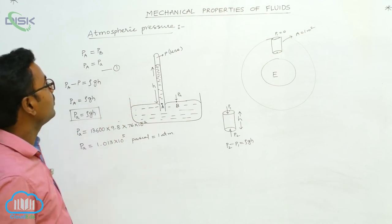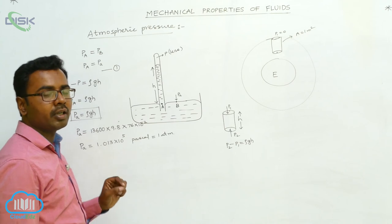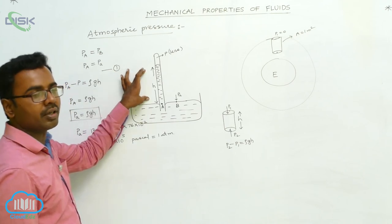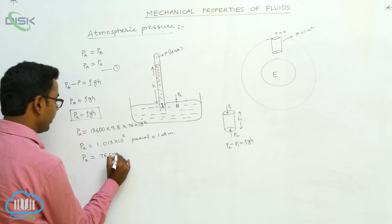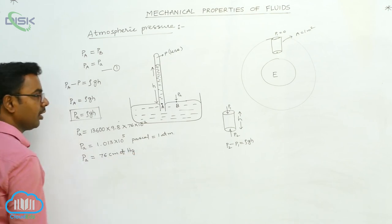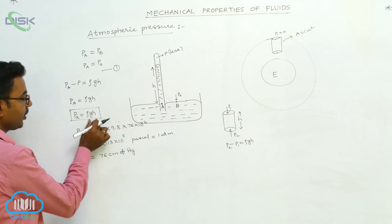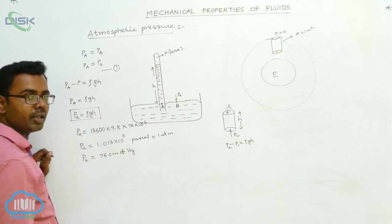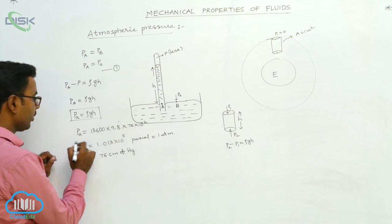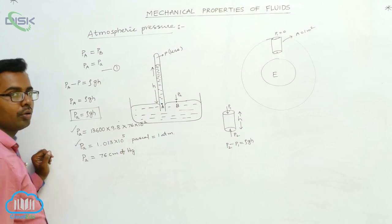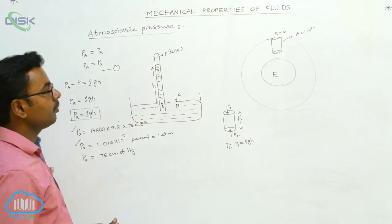Using this mercury barometer, we find the atmospheric pressure. Generally, atmospheric pressure is expressed in terms of the height of the mercury column in the mercury barometer. We can also state that atmospheric pressure at sea level is 76 centimeters of Hg — that is, 76 centimeters of mercury — which using the formula rho g h, with rho equals 13,600 kg/m³, g equals 9.8, and h equals 76 into 10 to the power minus 2 meters, gives 1.013 into 10 to the power 5 pascals, also taken as 1 atmosphere.